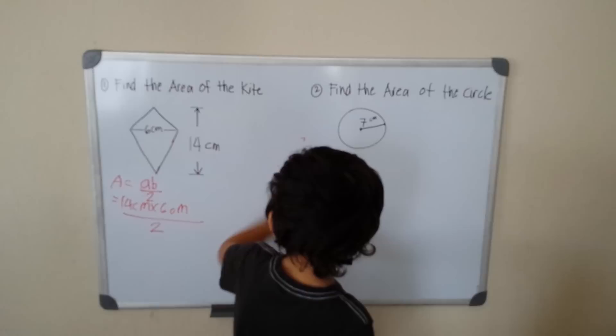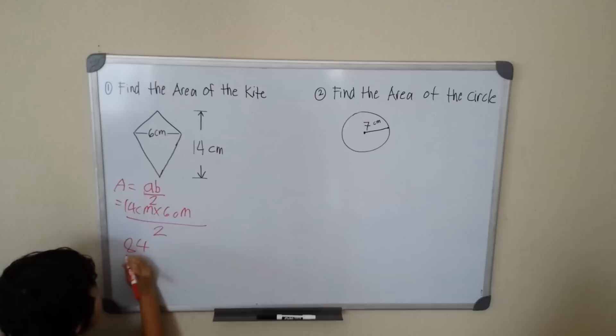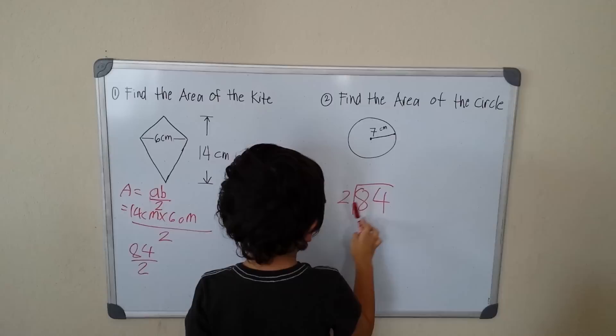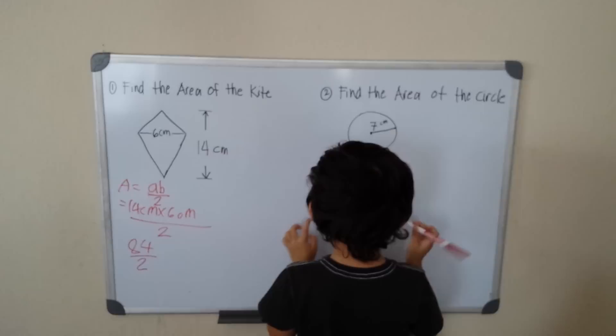84 divided by 2. 84 divided by 2 is, 8, how many 8 is in the 2? 84 divided by 2 is 4, 4 times 2 is 8, 8 minus 8 is 0.